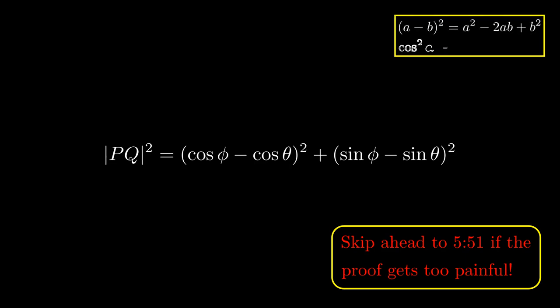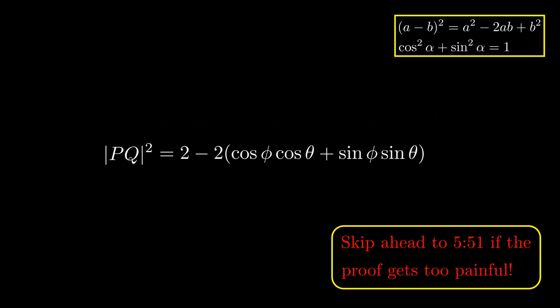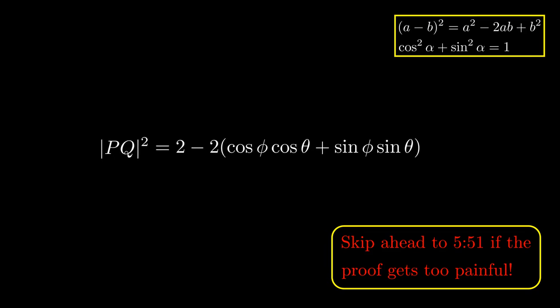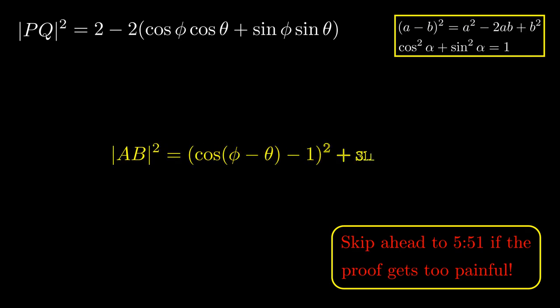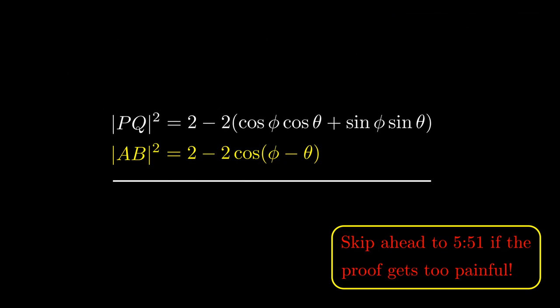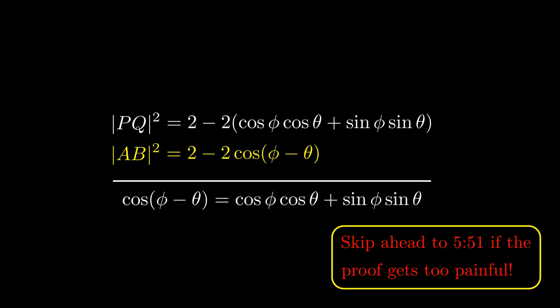Using the squaring rule for real numbers, together with the Pythagorean identity for sines and cosines, we find that this expression simplifies to 2 minus 2 times cosine of phi times cosine of theta plus sine of phi times sine of theta. Likewise, we find that the square of the distance between A and B simplifies to 2 minus 2 times cosine of phi minus theta. Since these expressions must be equal, it follows that cosine of phi minus theta is equal to cosine of phi times cosine of theta plus sine of phi times sine of theta, which proves the difference formula for cosine.